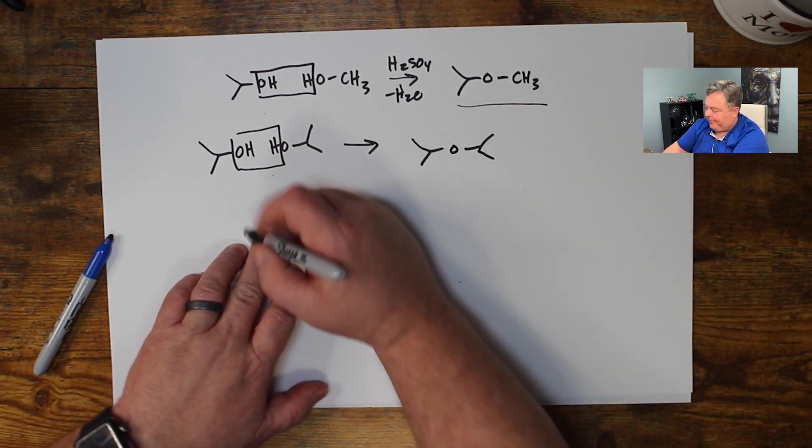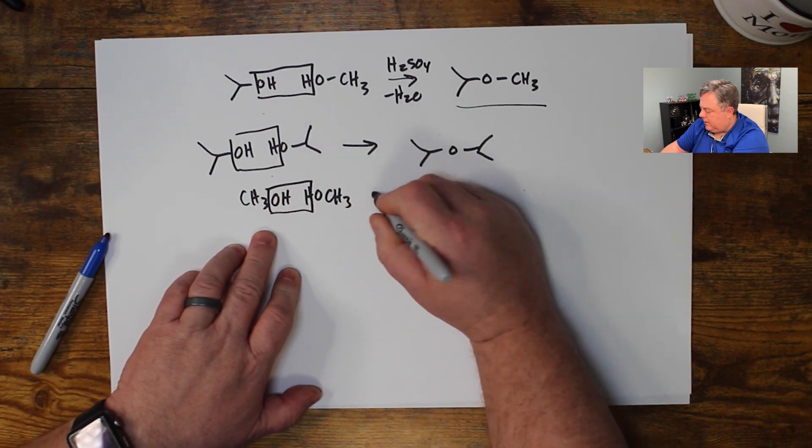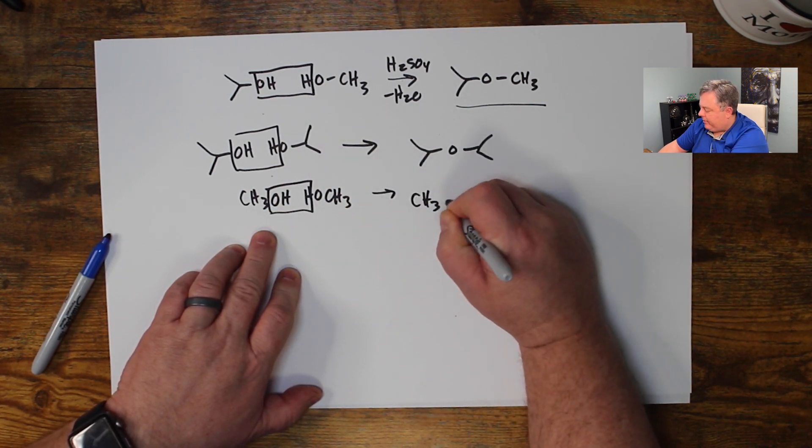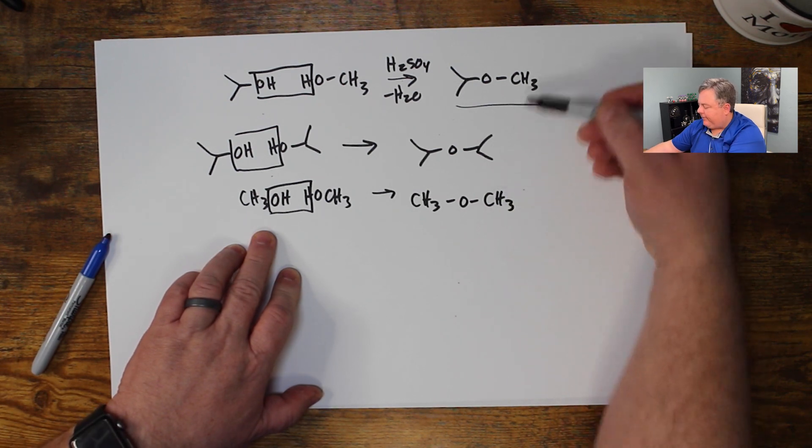Now this is a pretty good way industrially to make ethers, but I don't think it's the best way in the organic chemistry lab. I think the Williamson ether synthesis is better. And let's see if we can think about why that might be.